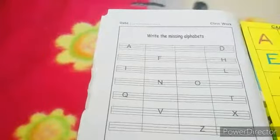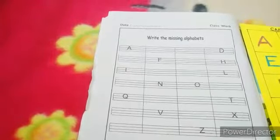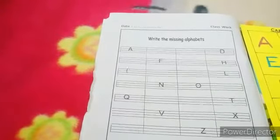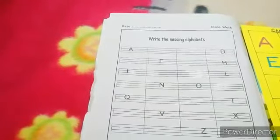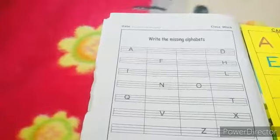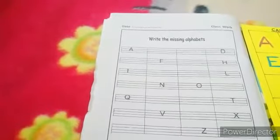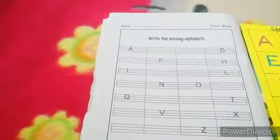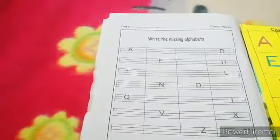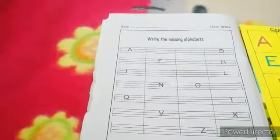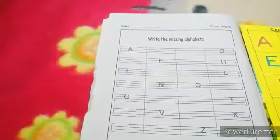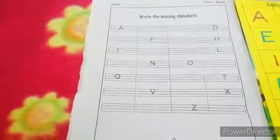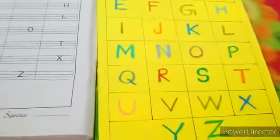Kids, as you can notice, there are 7 consecutive rows of 4 lines on this page. Out of the 26 letters of English alphabet, certain letters are already written over here and some of the letters are missing. What we need to do is figure out which are these missing letters. Ok kids? Kids, like we had done in our previous class, we will find out the missing letters on this page with the help of this chart.